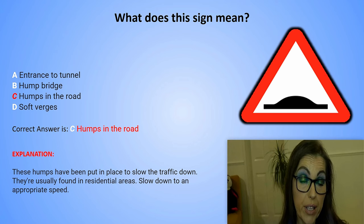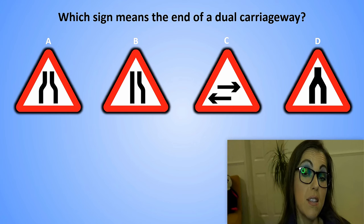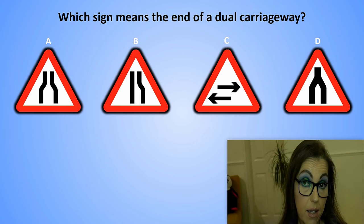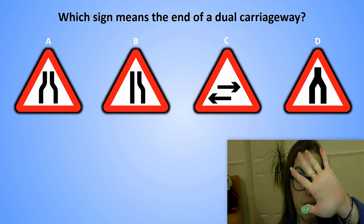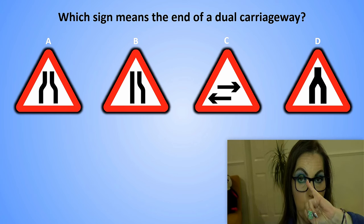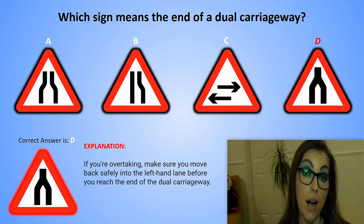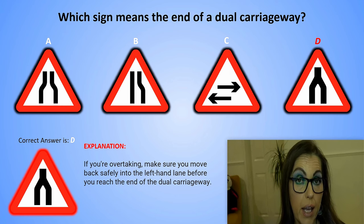Which sign means the end of a dual carriageway? Sign A, Sign B, Sign C, or Sign D? The correct answer is D. Explanation: If you are overtaking, make sure you move back safely into the left-hand lane before you reach the end of the dual carriageway.